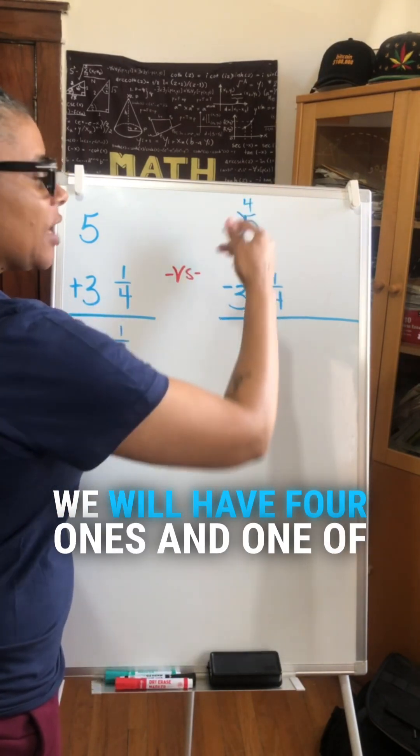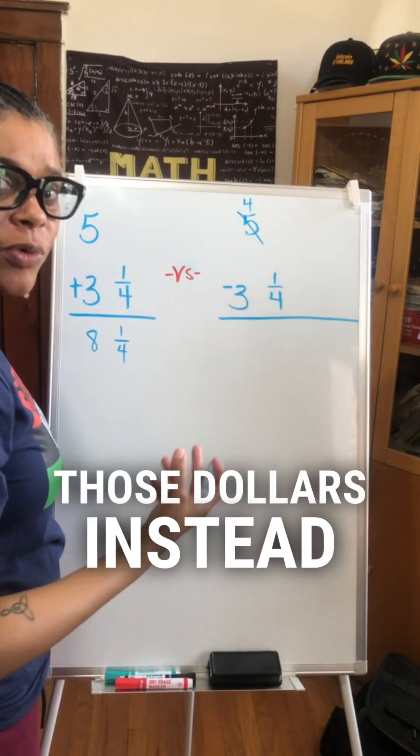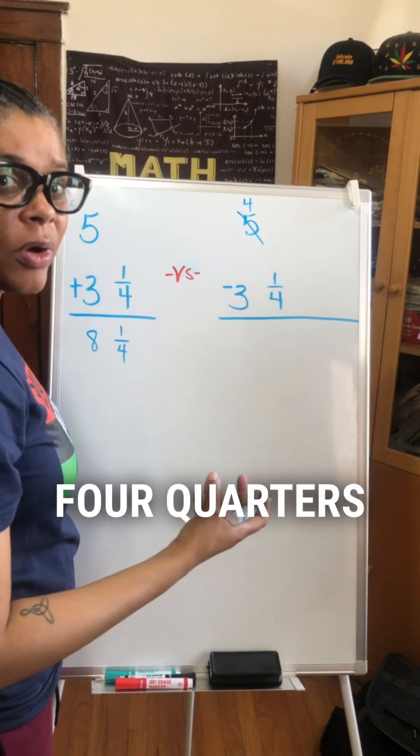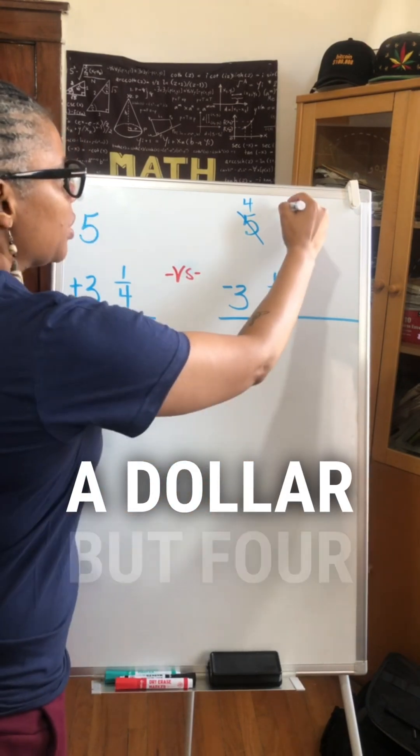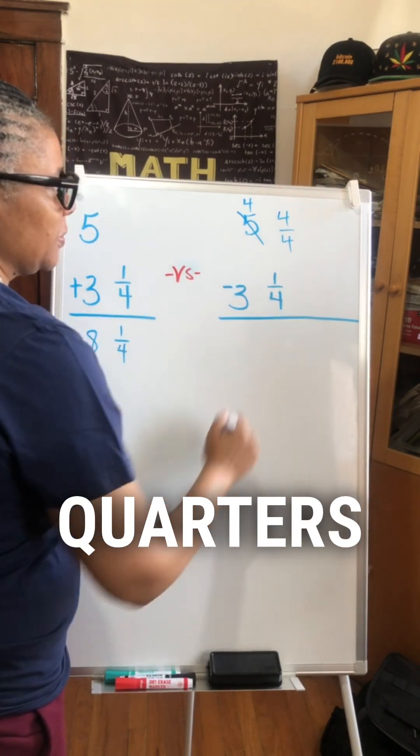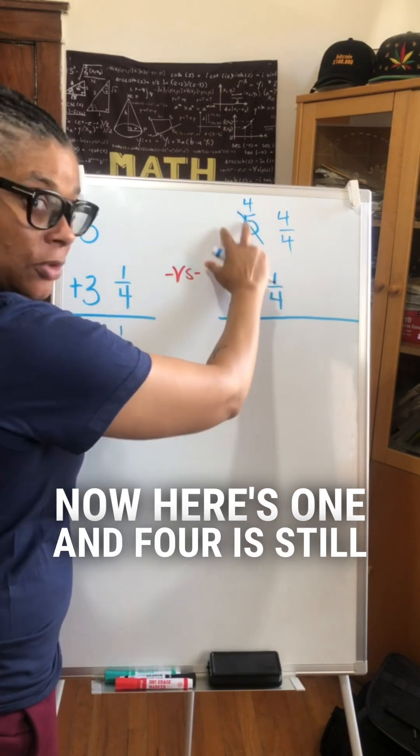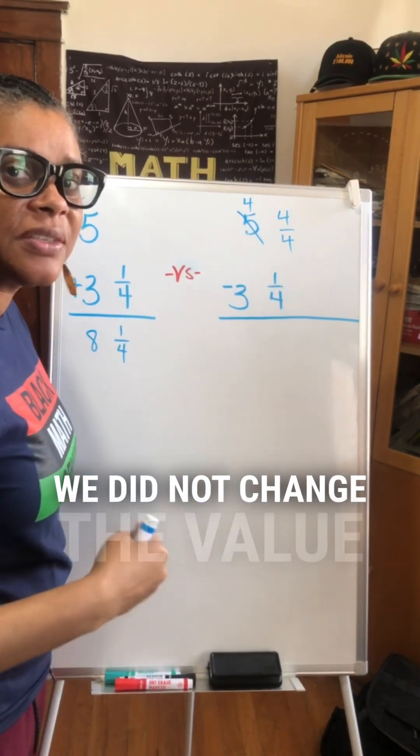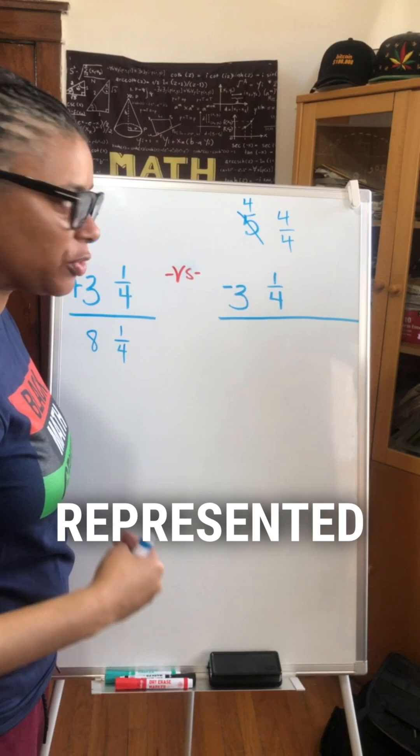We will have four ones and one of those dollars. Instead we want to make it four quarters. Still equal to a dollar but four quarters. Now here's 1 and 4 is still equal to 5. We did not change the value. We changed the way that it's represented.